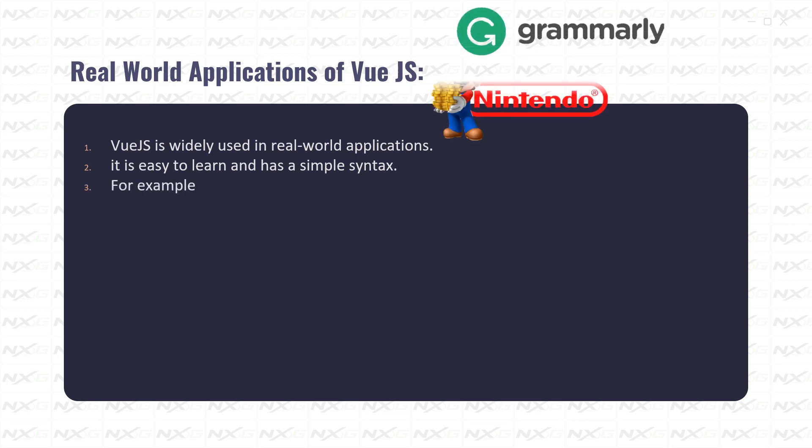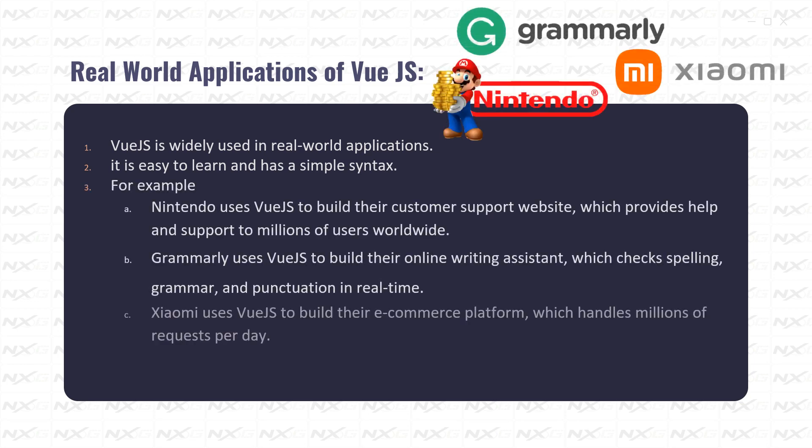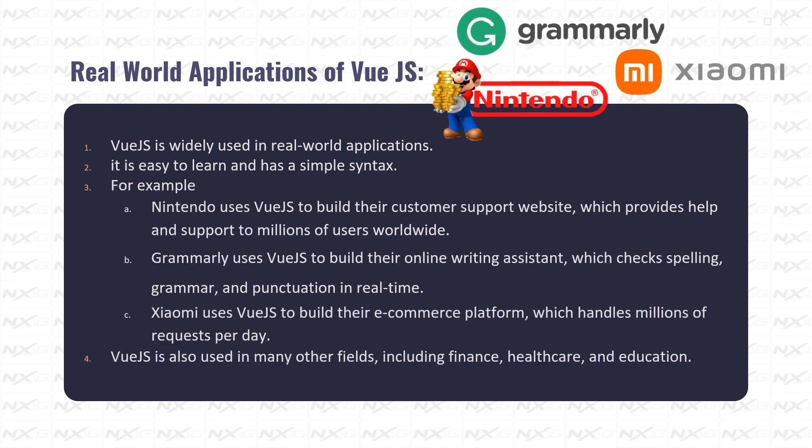Real-world applications of Vue.js: Vue.js is widely used in real-world applications because it is easy to learn and has a simple syntax. For example, Nintendo uses Vue.js to build their customer support website, which provides help and support to millions of users. Grammarly uses Vue.js to build their online writing assistant, which checks spelling, grammar, and punctuation in real-time. Xiaomi uses Vue.js to build their e-commerce platform, which handles millions of requests per day. Vue.js is also used in many other fields, including finance, healthcare, and education.